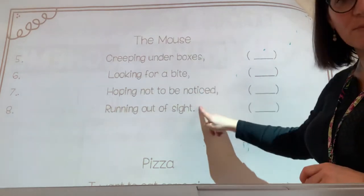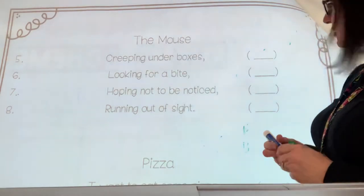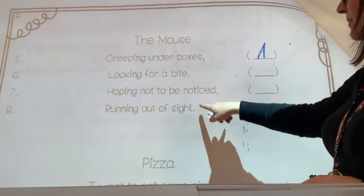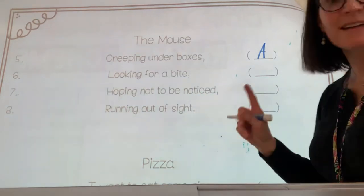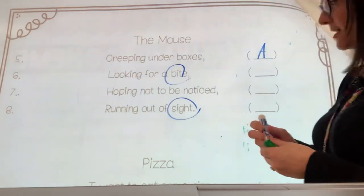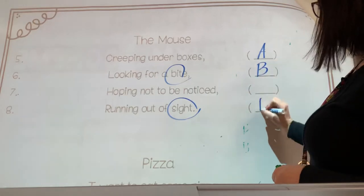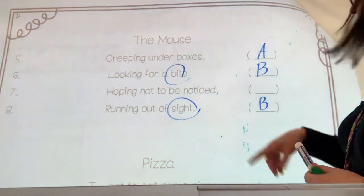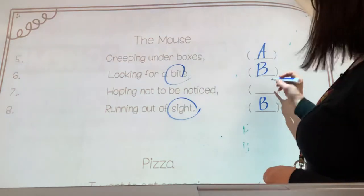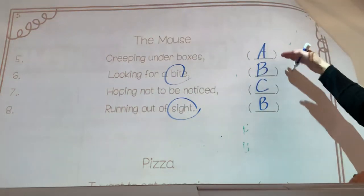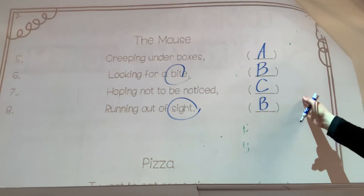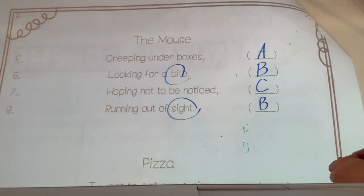So what words are we going to look at for rhyming? We're always going to look at the last word of each line: boxes, bite, noticed, sight. None of the words rhyme with 'boxes,' so I'll label that A. 'Bite' and 'sight' rhyme, so they get a B. And 'noticed' — nothing rhymes with noticed — so it gets C. The rhyme scheme for The Mouse is A, B, C, B. Scheme is the academic word for this rhyming pattern.